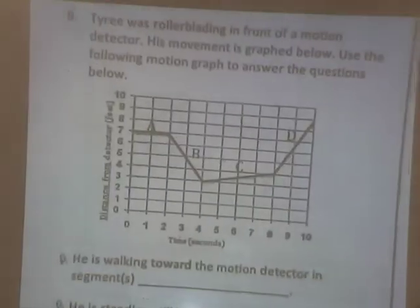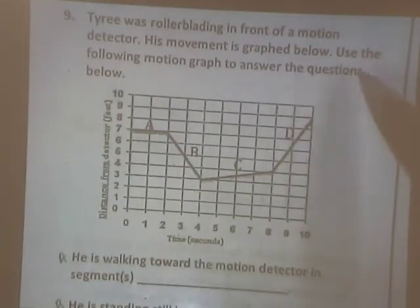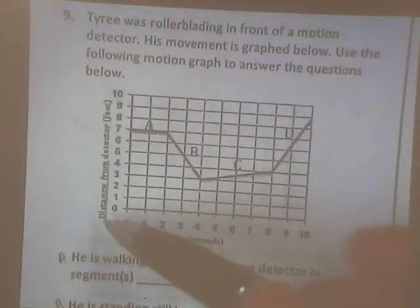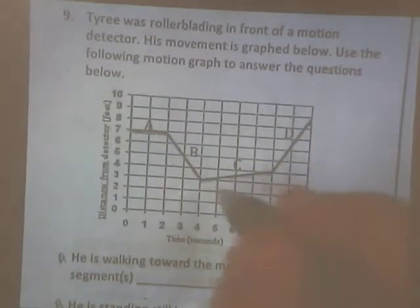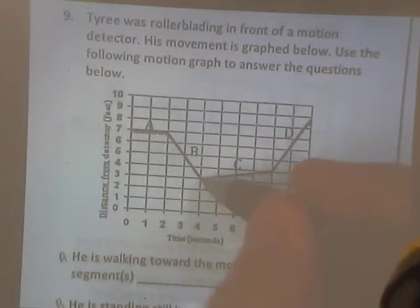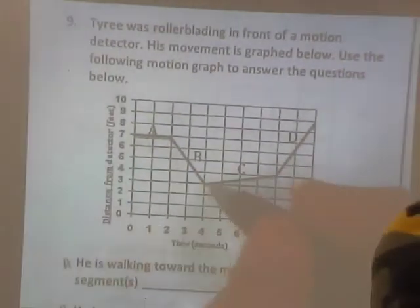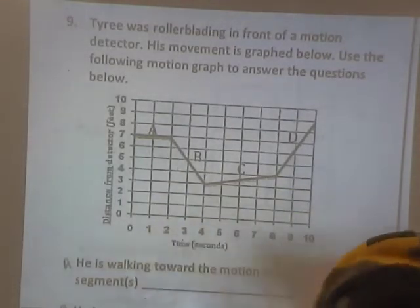Number 9. So Tyree is rollerblading in front of a motion detector. His move is graphed below. Use the following motion graph to answer the following questions. So what's the y-axis say? The distance from the detector. Yeah. Okay.